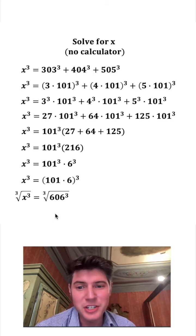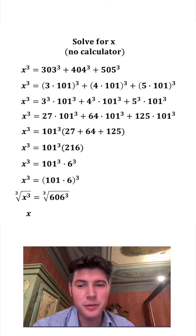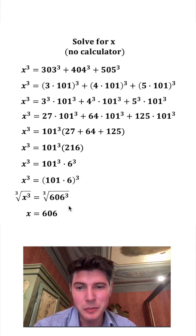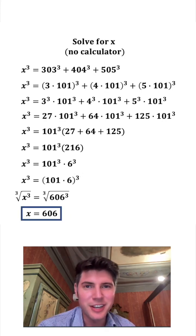So if I cube both sides of the equation, the left hand side is going to be x, and the right hand side is going to be 606. And we have now solved for x, so we can put a box around it. x equals 606. How exciting.